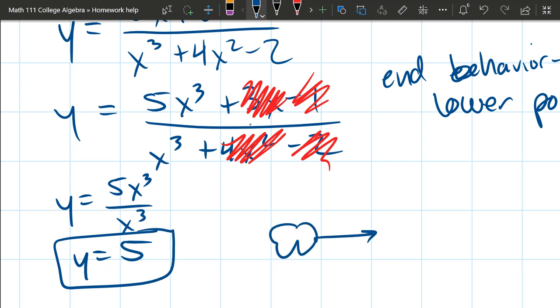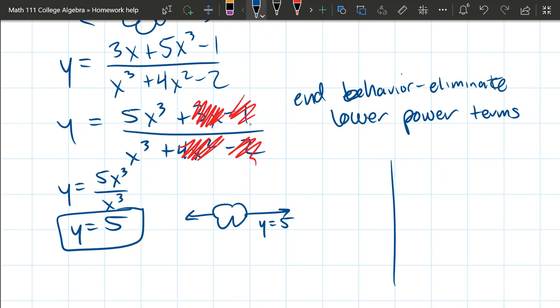If we were drawing end behavior, you would just label it with y equals 5. And if we're actually graphing this, you would go up to 5. So this is our x, y axis. I like to use a separate color, a second color to do asymptotes. So this would be up at 5 right there.